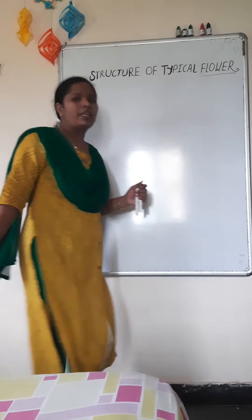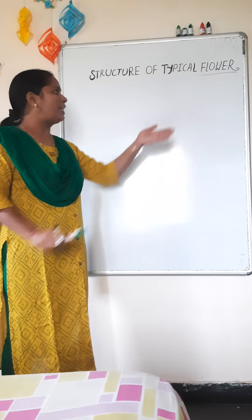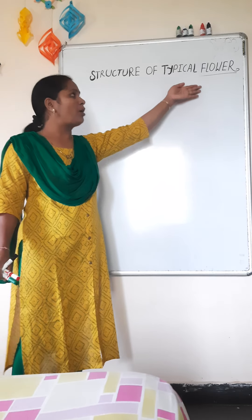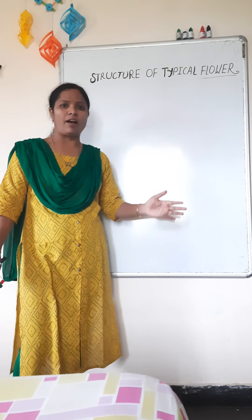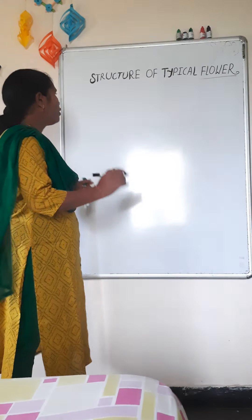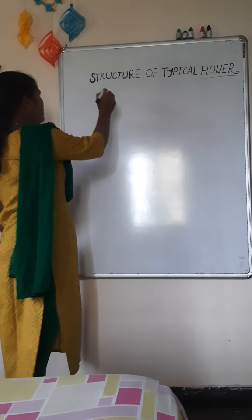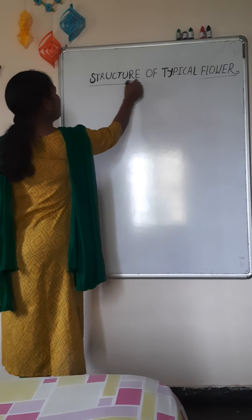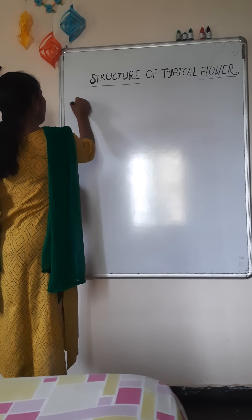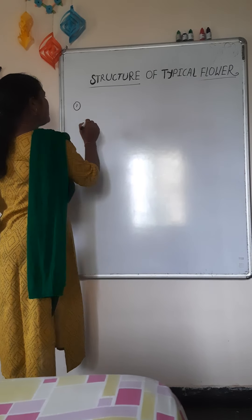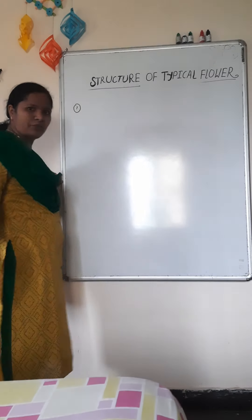Today in this session we will discuss the detailed structure of a flower. The typical flower consists of three main parts.